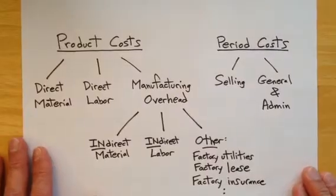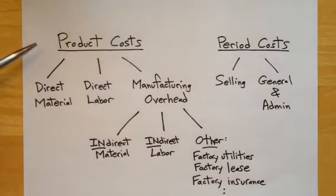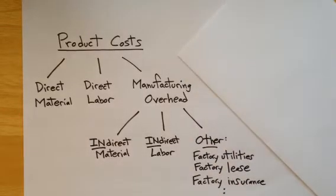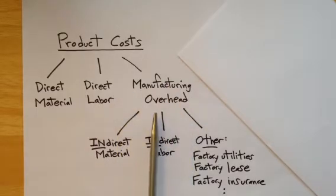Now we're looking at a tree diagram that shows us the same costs. We have the product costs incurred on the factory side of the operation, and the period costs incurred in the tall headquarters building for all of the sales and marketing and upper-level senior staff. We'll get to period costs in a moment. Product costs include the categories of direct material, direct labor, and the general category of manufacturing overhead. Let's see what comes under manufacturing overhead.